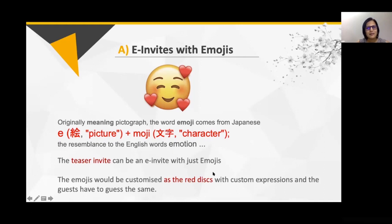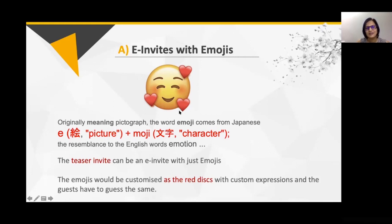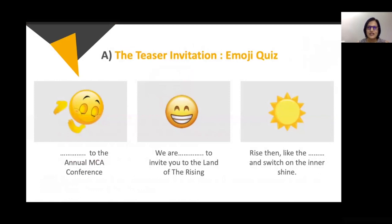It was supposed to be a teaser — a communication to create excitement. We don't reveal the theme or everything about the event; you just get the curiosity and interest of the audience peaked. We suggested e-invites with emojis, but the emojis would be customized as red discs — connecting to the crimson disc visual. The creative invitation would show an emoji picture depicting a word left blank, and people had to guess what the word was.